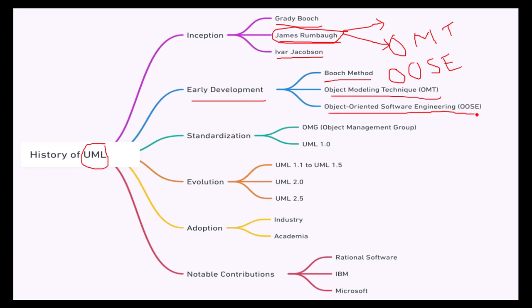All these three methods were combined in the earlier version. Then the standardization started, Object Management Group was formed, and finally UML 1 came into existence. The first version of UML was basically UML 0.8.